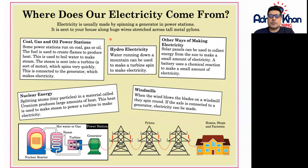Very large generators that constantly keep on spinning create electricity, and that electricity then flows through the wires into our homes. Let's start with coal, gas and oil power stations. Some power stations run on coal, gas or oil. Fuel is used to create flames to produce heat. This is used to boil water to make steam. The steam is sent into turbines, a sort of motor which spins very quickly. This is connected to the generator which makes electricity.